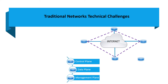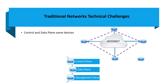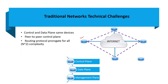When we talk about traditional network technical challenges, a few things stand out. Your control plane and the data plane are sitting on the same box. When you talk about the control plane, you need to configure all these devices to talk to each other to build the routing table, and those routing table protocols have to get propagated to all peers participating in the network.